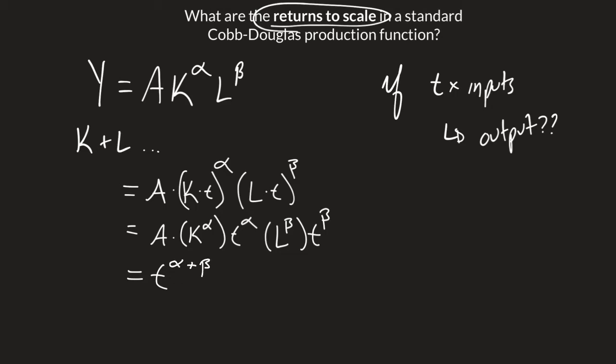And what we're left with is A times K to the alpha, L to the beta. And what we can notice is this right here was our original output.